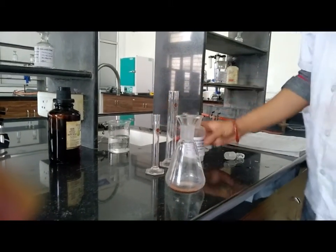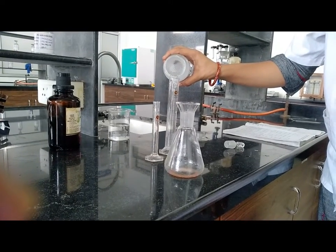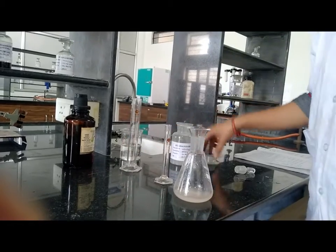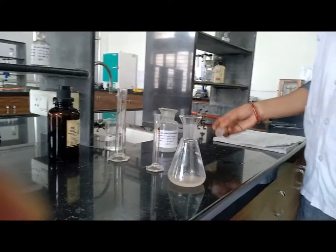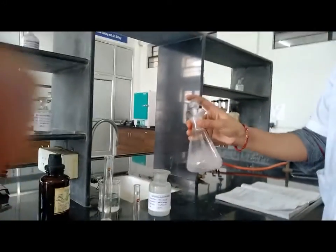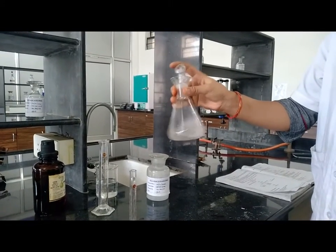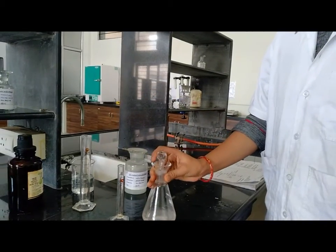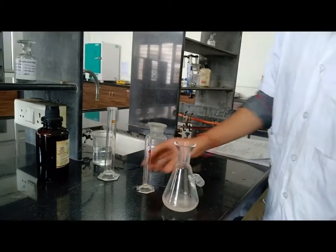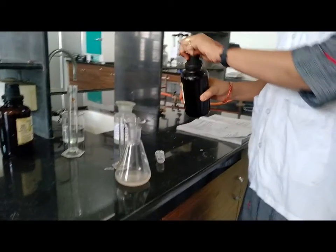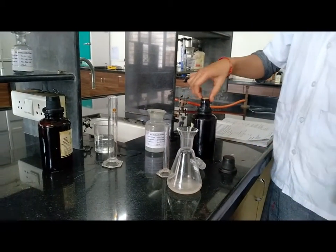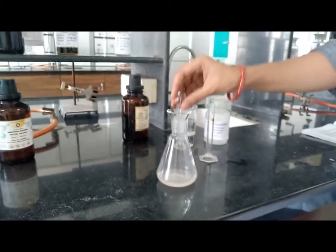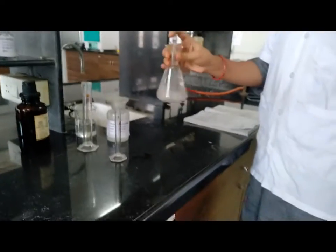And add 30 ml of sodium hydroxide solution. Now stopper the flask and shake it continuously. Now add 4 ml of benzoyl chloride solution. Again stopper the flask and shake it continuously for 15-20 minutes.